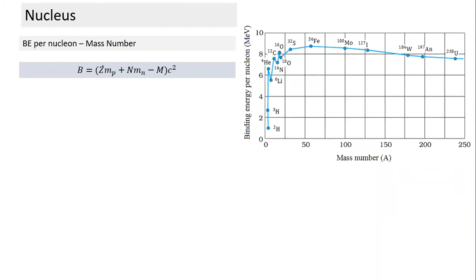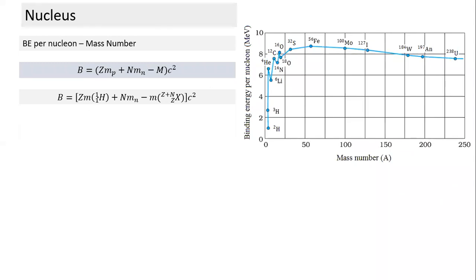Binding energy is the difference between the original mass minus the combined mass — a very simple relationship. It's a difference in mass into c squared. Even though we need the mass of the nucleus, by adding the mass of electrons we convert it into atomic mass. Since atomic mass of hydrogen is known for any atom, if we know the atomic mass from the periodic table we can calculate binding energy.